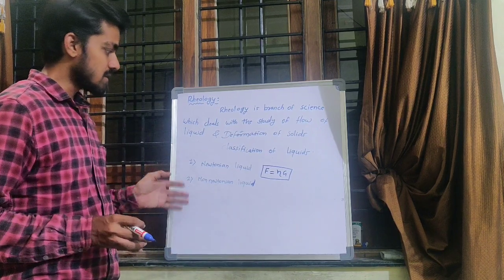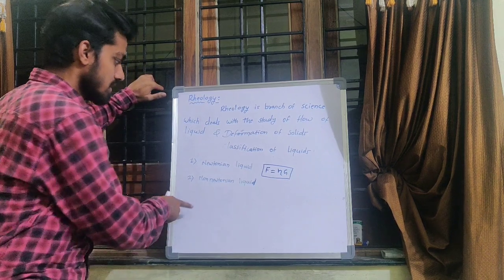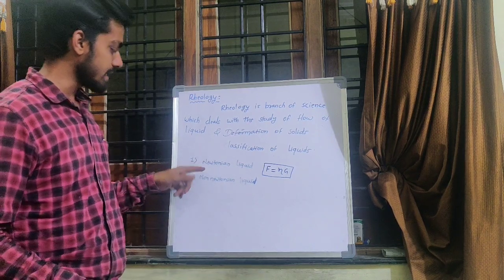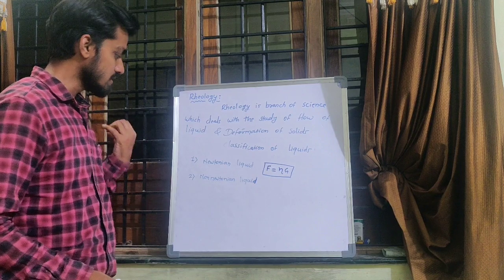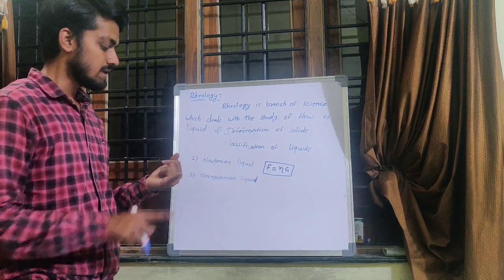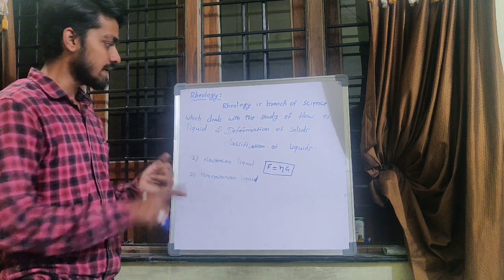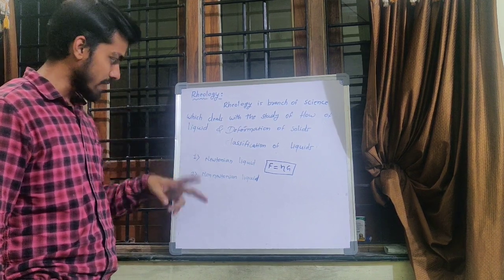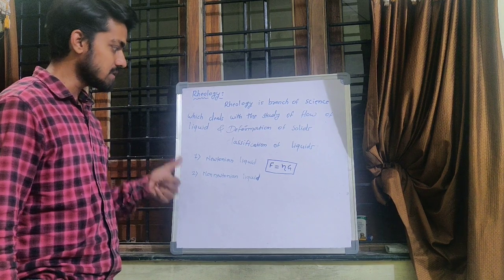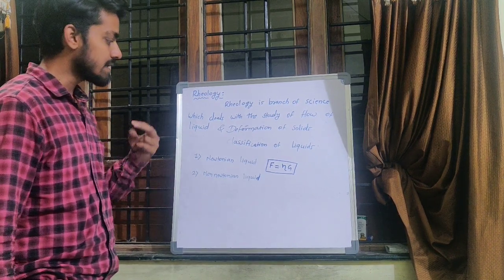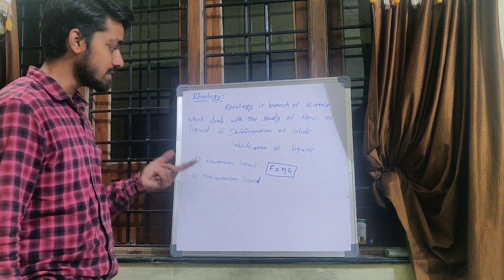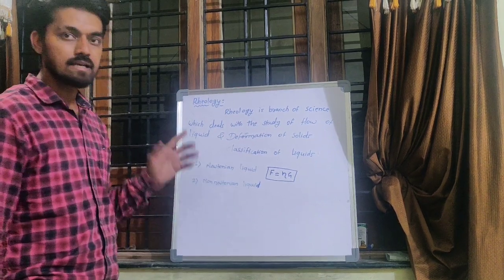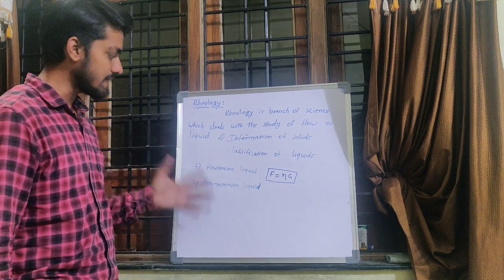If we draw a plot of shear stress against rate of shear, we will get a straight line in the case of a Newtonian liquid. In the case of non-Newtonian liquids, they are further divided into two types: time-independent and time-dependent. In time-independent, they are further classified into three types: plastic, pseudo-plastic, and dilatant flow.